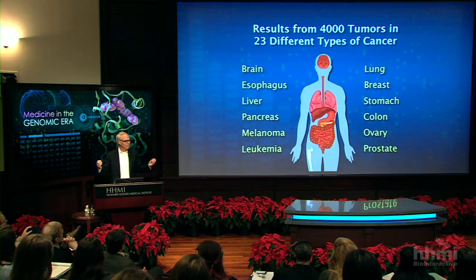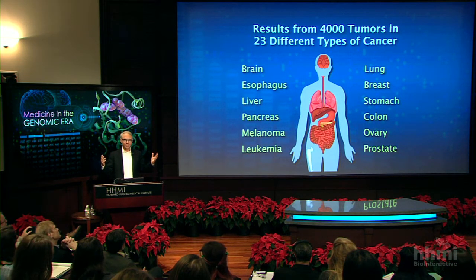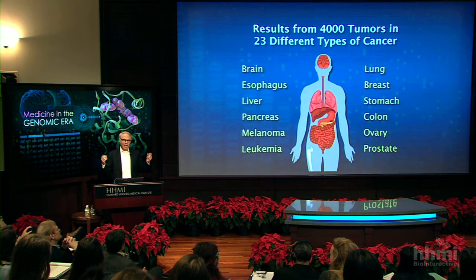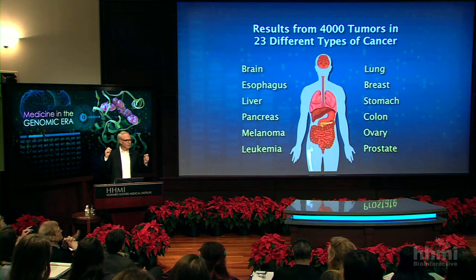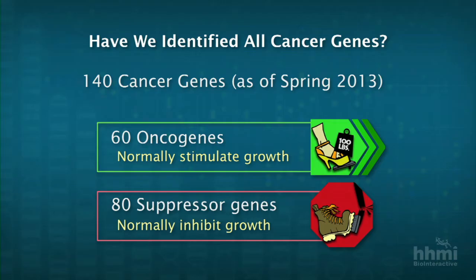I want to pause for a minute and get you to think about what are the possible questions that can be asked and answered once you have this avalanche of data. One of the first ones that comes to mind is: in each individual patient's tumor, how many mutations actually are there? As of a data analysis from earlier this year, the number of cancer genes is 140.